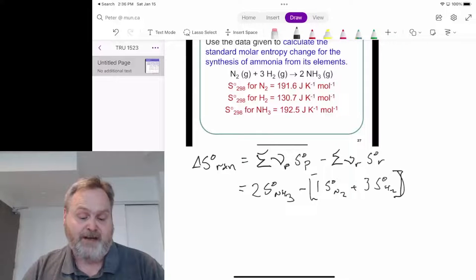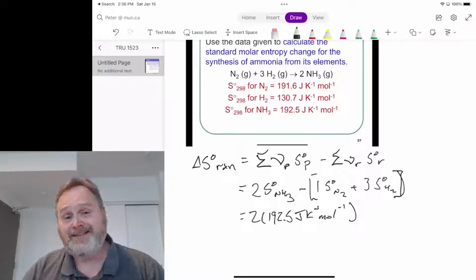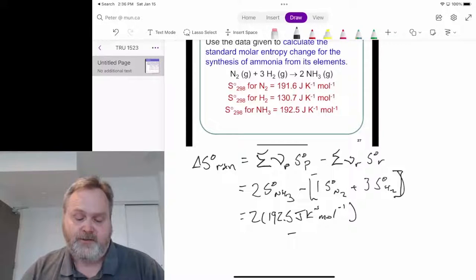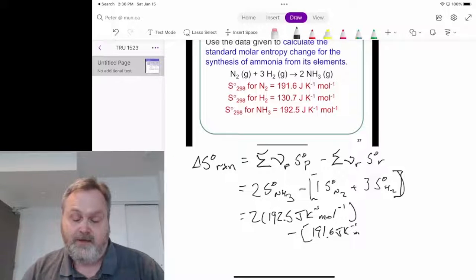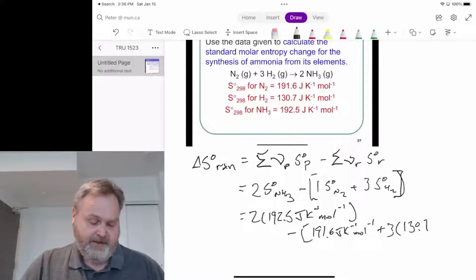And I should probably make that a square bracket. So that's going to be two times 192.5 joules per Kelvin, and again, we're doing this per mole of reaction, per mole of balanced equation, so it makes sense for us to keep that unit in there. From this, we're going to subtract the 191.6 joules per Kelvin per mole, multiplied by one, but I'll ignore that, to which we're also going to add three times 130.7 joules per Kelvin per mole.